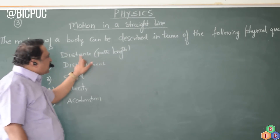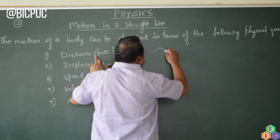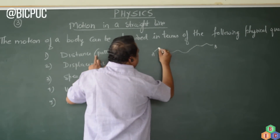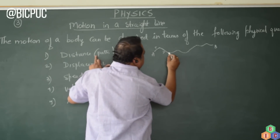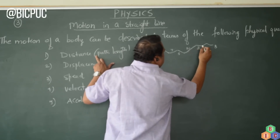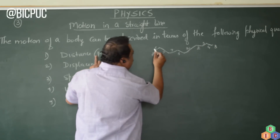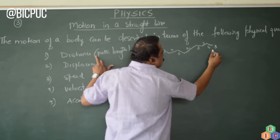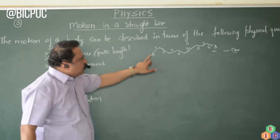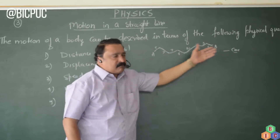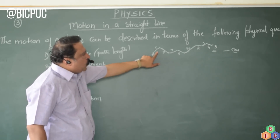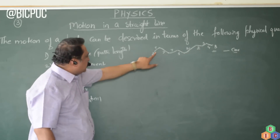Distance or path length is the length of the path a body travels from A to B. For example, 5 cm, 7 cm, 7 cm, 4 cm, 10 cm, 2 cm, 3 cm, 4 cm — you add up all these values to get the total distance. Here, the particle is moving without any sense of direction, taking many turns.